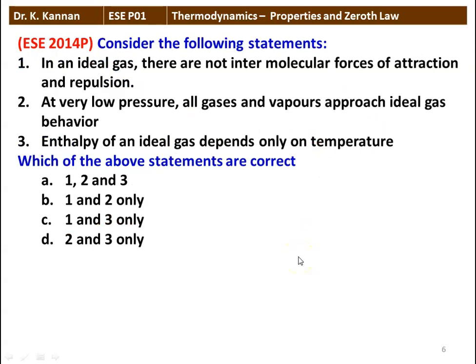Next question: consider the following statements. In an ideal gas, there are no intermolecular forces of attraction and repulsion. Second, at very low pressure, all gases and vapors approach ideal gas behavior. Third, enthalpy of an ideal gas depends only on the temperature. Which of the above statements are correct? The correct answer is 1, 2, 3 — all three statements are correct.